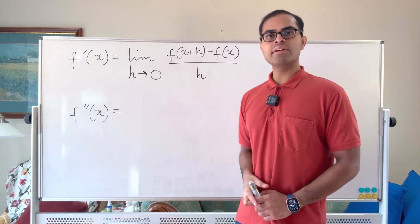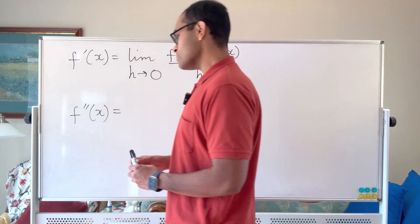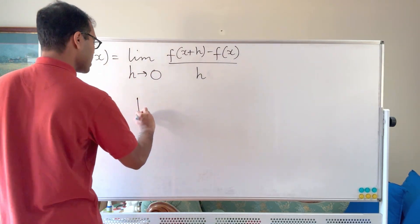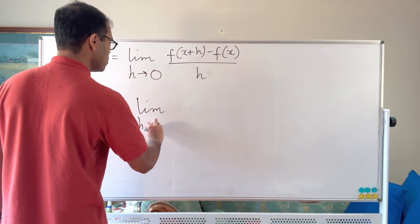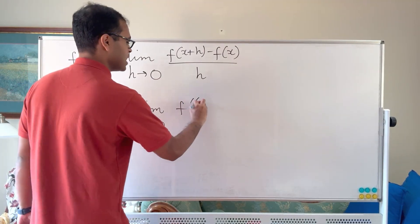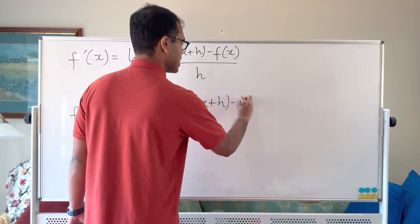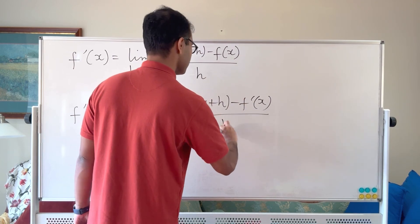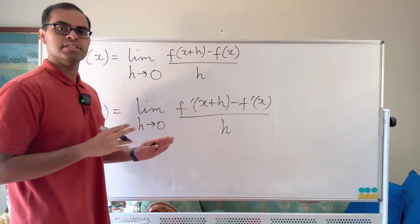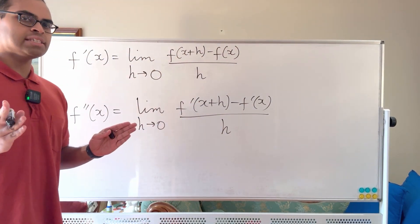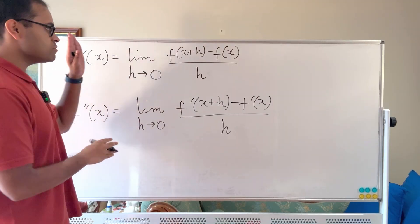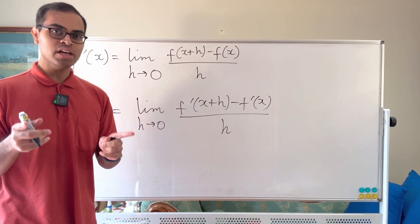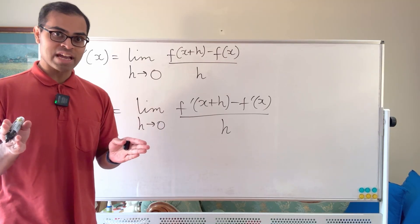What about the second derivative? Of course we can do the similar process — we can say it is the derivative of the derivative, and write this as the limit as h goes to zero of f prime of x plus h minus f prime of x divided by h. But the problem is that it's all in terms of the first derivative, so can we define the second derivative just in terms of f? I'm going to show you that in this video, and it's so beautiful — I will show you the formula right now.